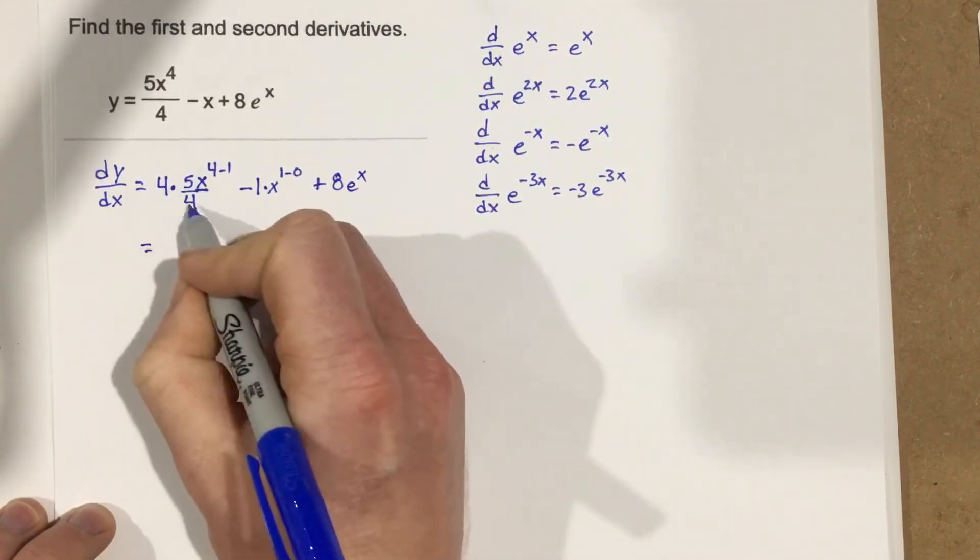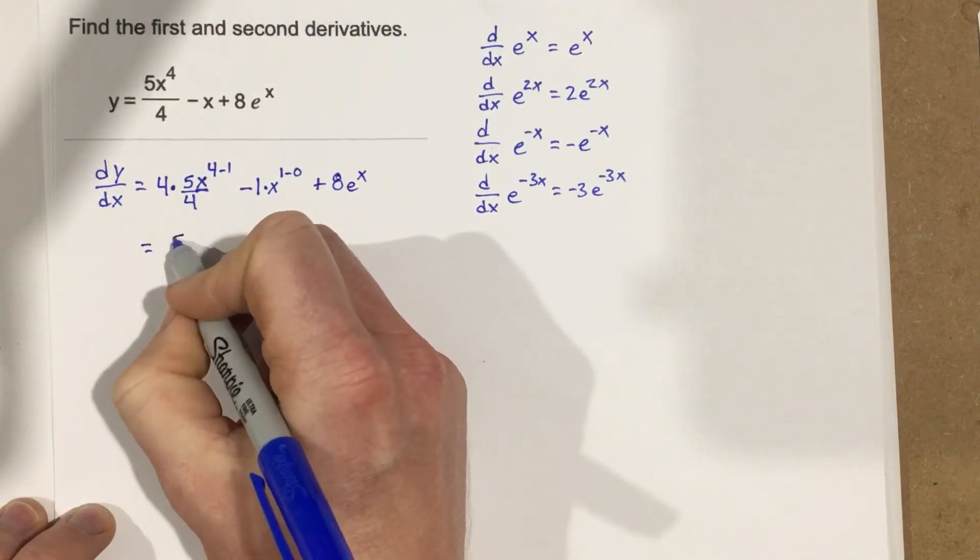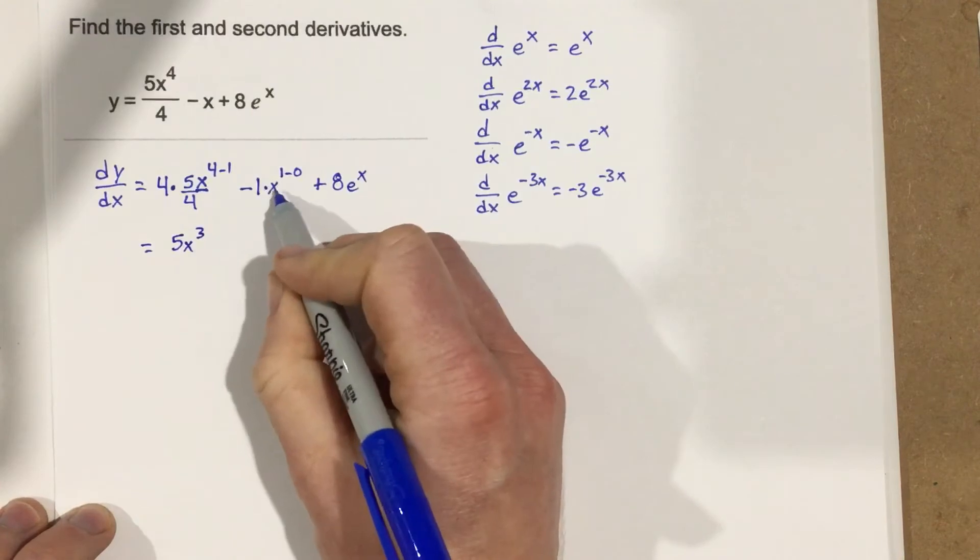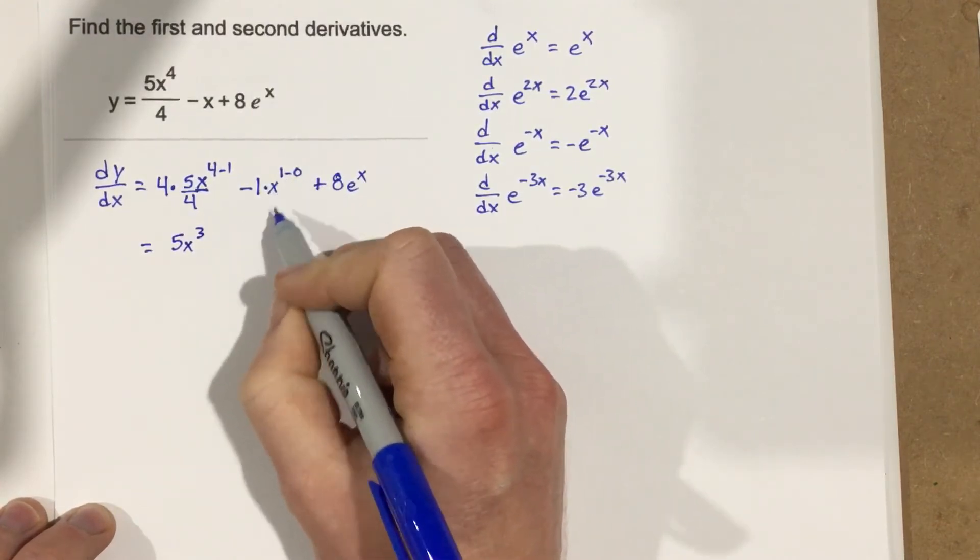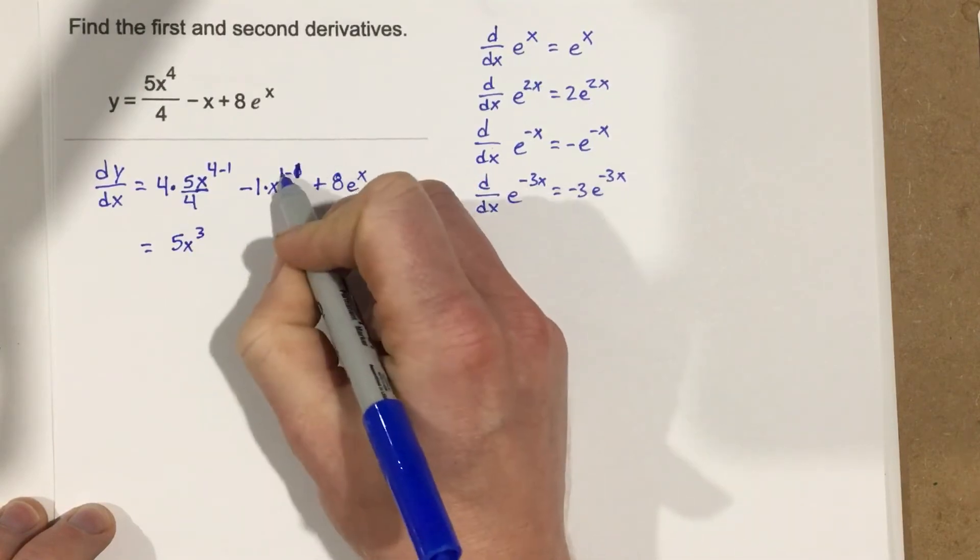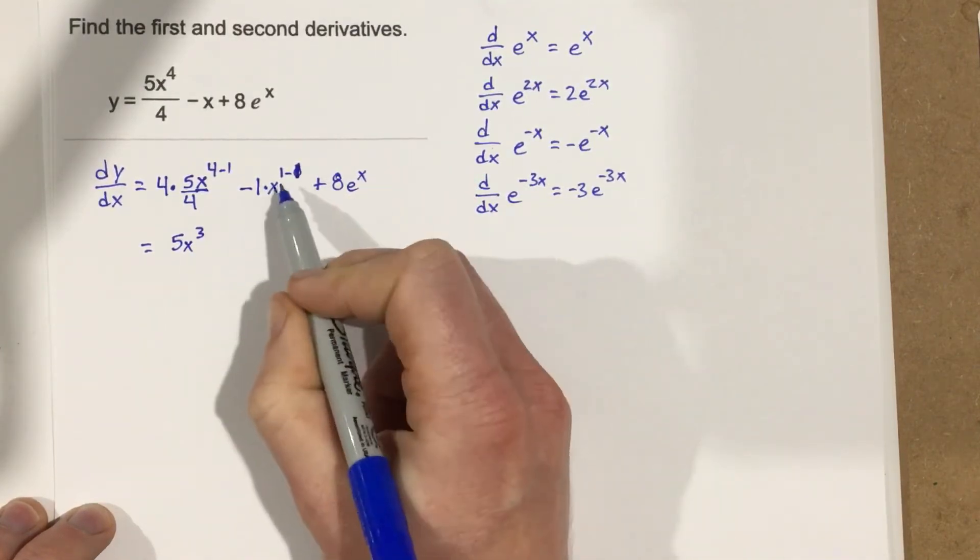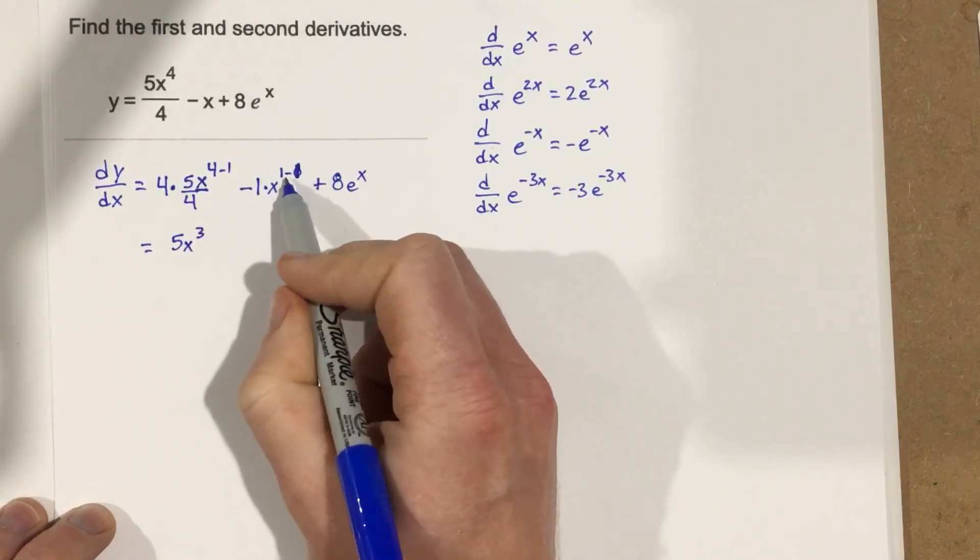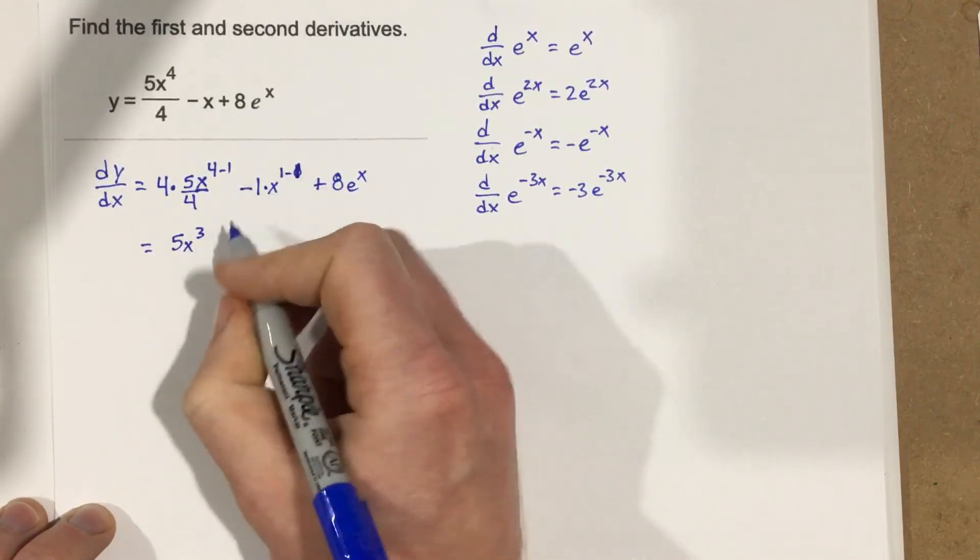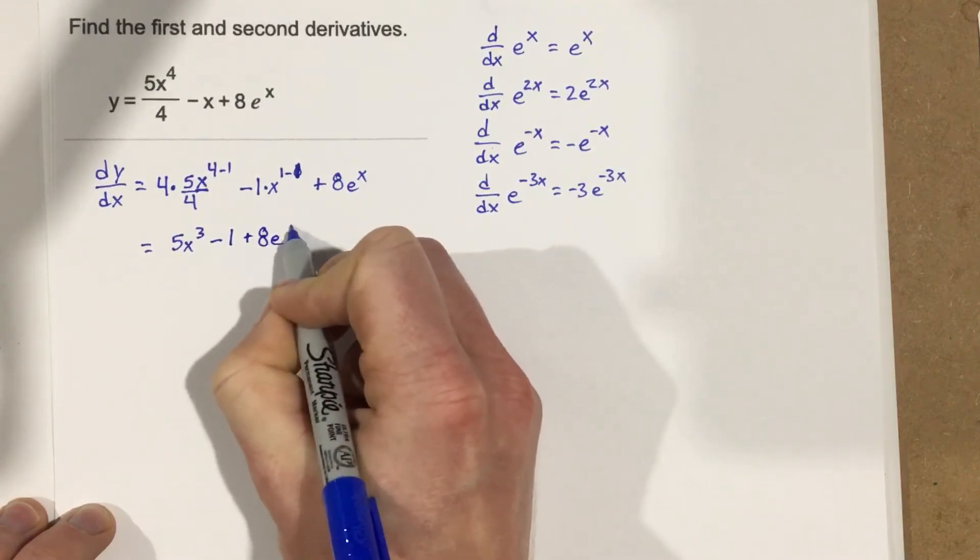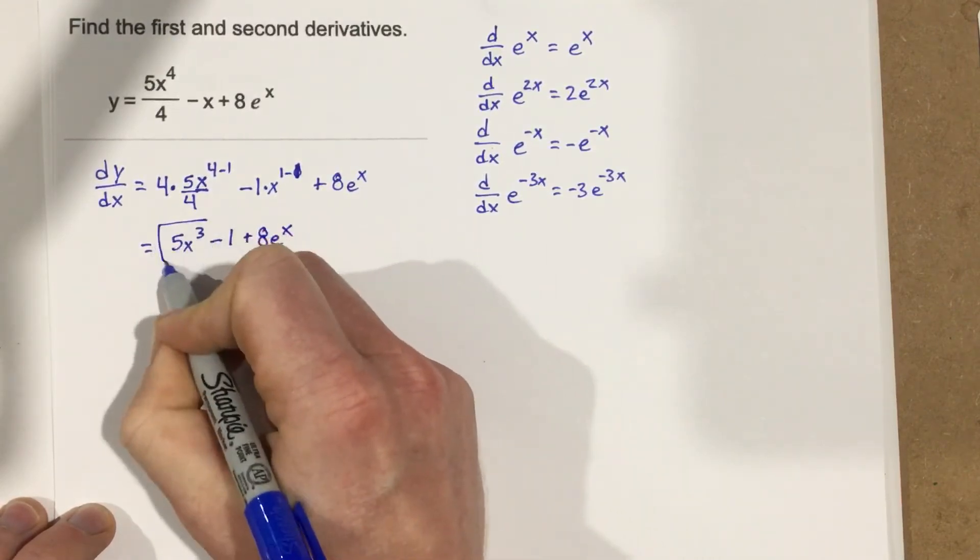This equals, the fours cancel here, we're left with 5x cubed. This will be just 1 here, right, 1 minus 1 is x to the 0 power, and we know x to the 0 power is 1, so this is minus 1, plus 8e to the x. So this is the first derivative here.